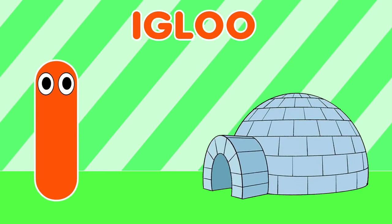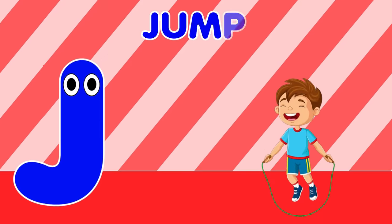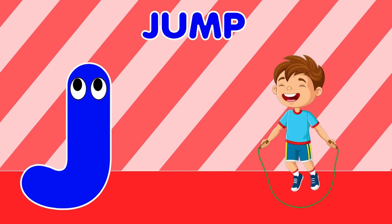I is for igloo, i-i-igloo. J is for jump, j-j-jump.